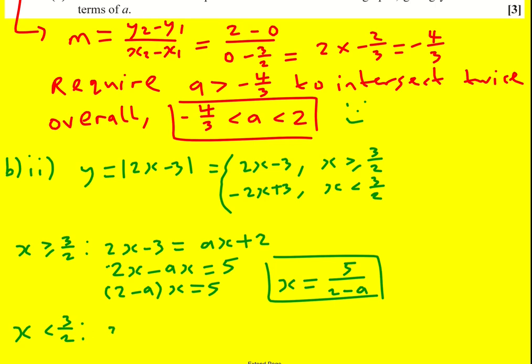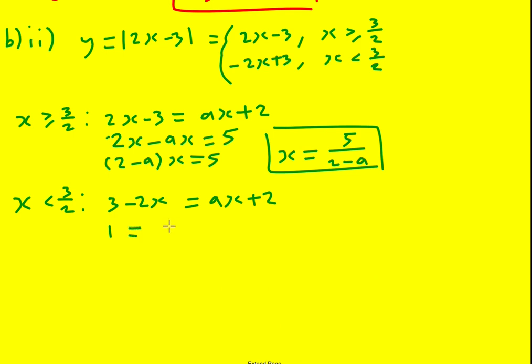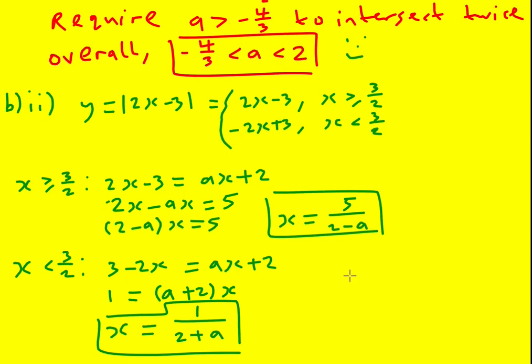I found one of the points of intersection. Now it's just the other one when x is less than 3 over 2. So now I get 3 minus 2x equals ax plus 2. This time I'm going to get 1 equals ax plus 2x, or a plus 2 times x, factorizing it straight away. So x is 1 over 2 plus a. Okay, those are our two answers in terms of a.